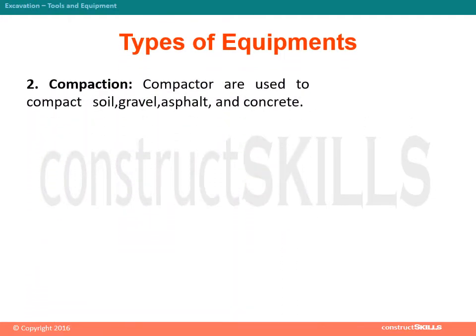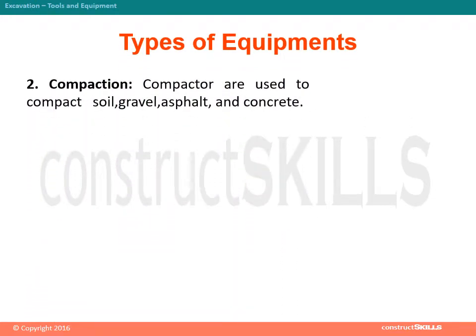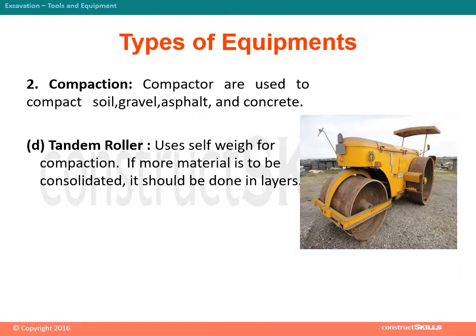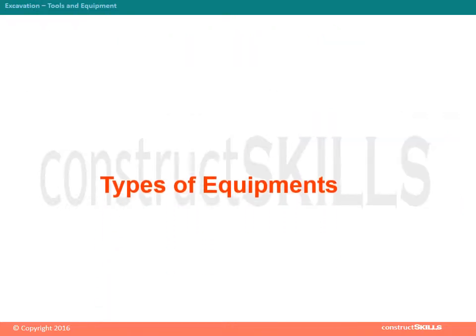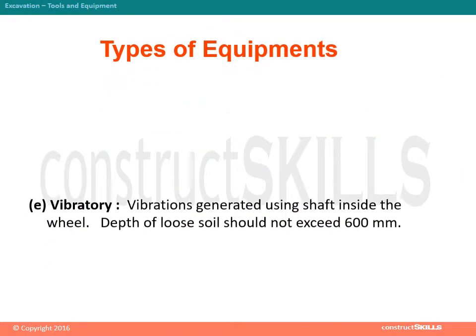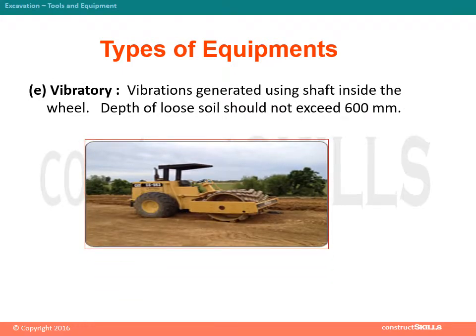Second, compacting equipment. Compactors are used to compact soil, gravel, asphalt, and concrete. D. Tandem roller uses self-weight compaction. If more material is to be consolidated, it should be done in layers. E. Vibratory roller — vibrations are generated using a shaft inside the wheel, and depth of loose soil should not exceed 600 mm.